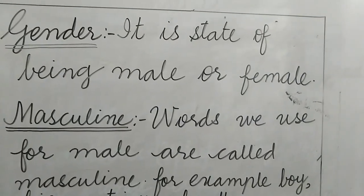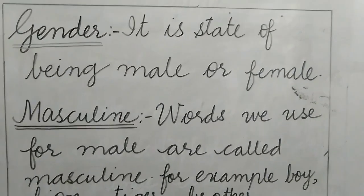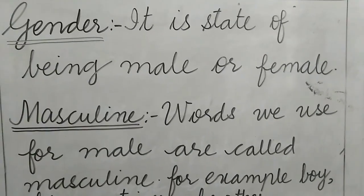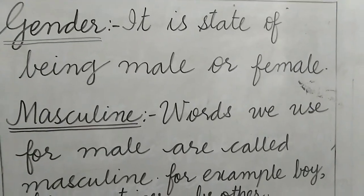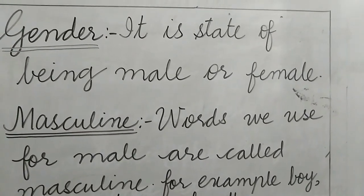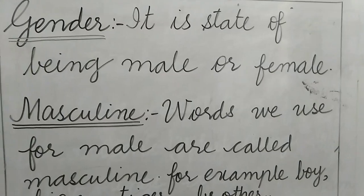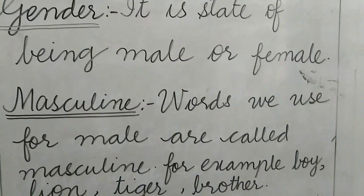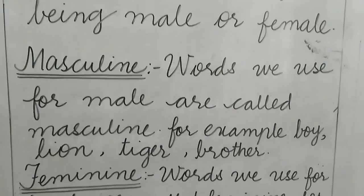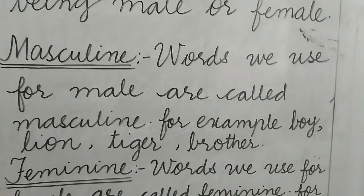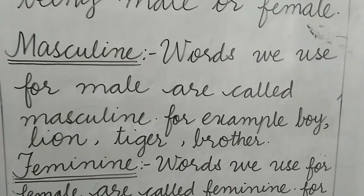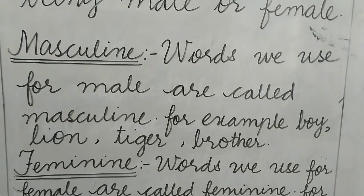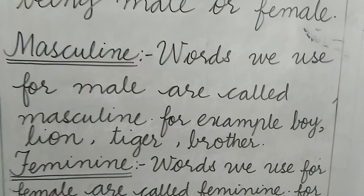What is gender? Gender is a state of being male or female. It tells us to identify whether the person is a male or a female, or whether the mammal is a male or a female. Now, what is masculine? Words we use for male are called masculine. For example: boy, lion, tiger, and brother.